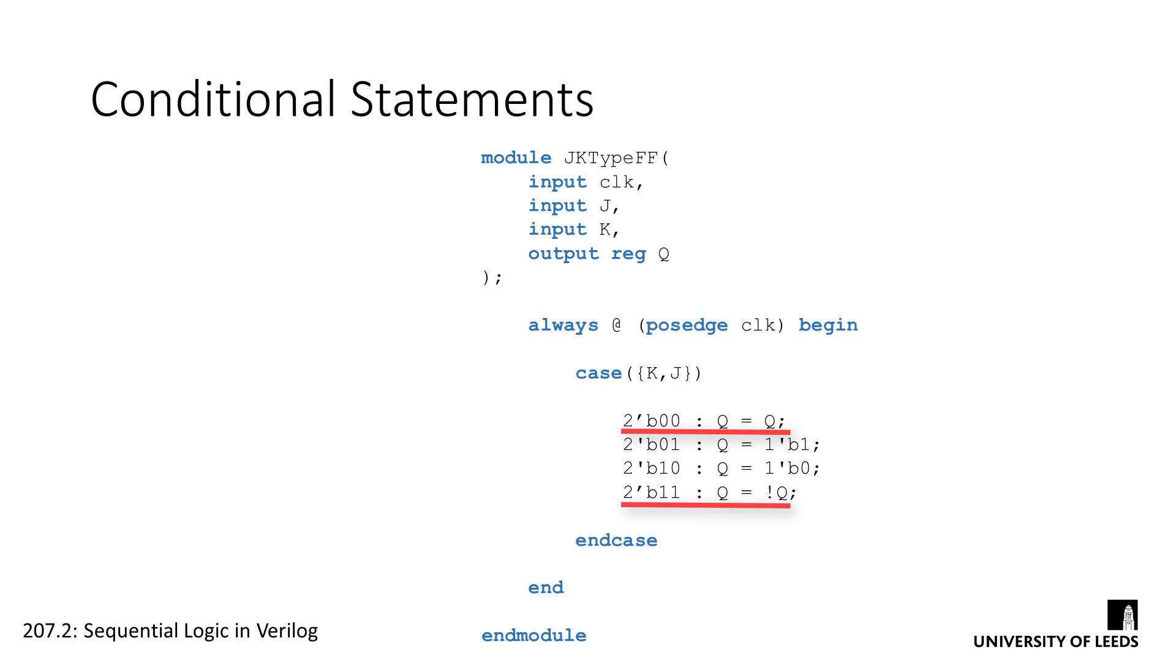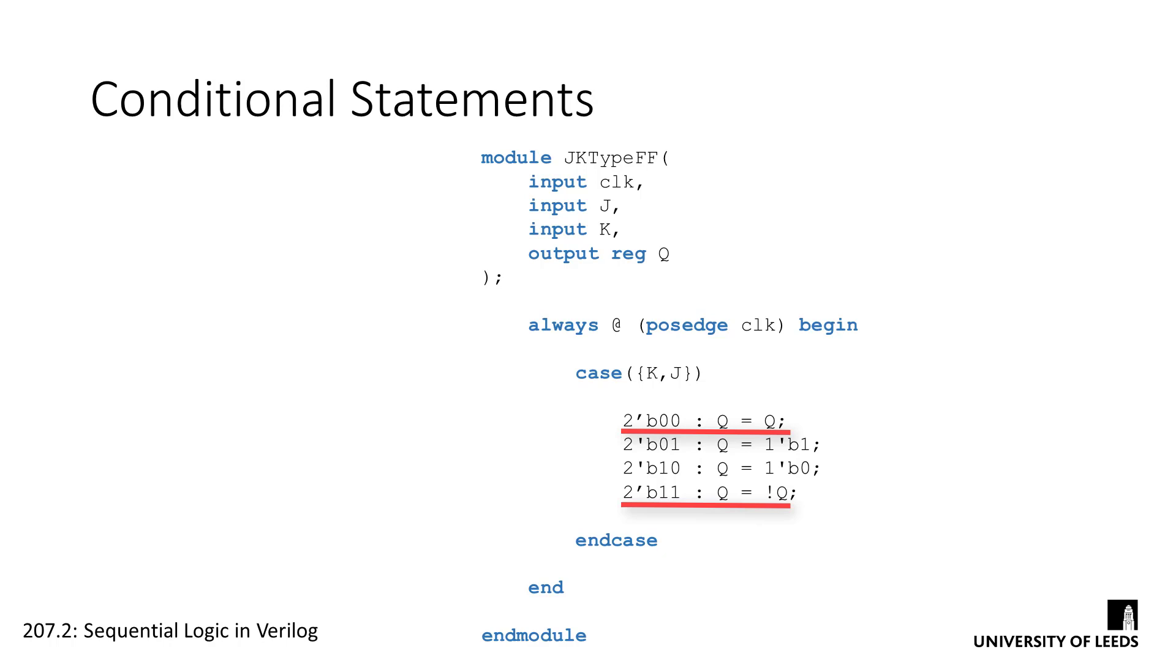However, if it's the first tick of the clock, there isn't a previous state to keep or toggle. In simulation, the design will remain in an unknown state until a fixed value is either given or set by changing the values of J and K.